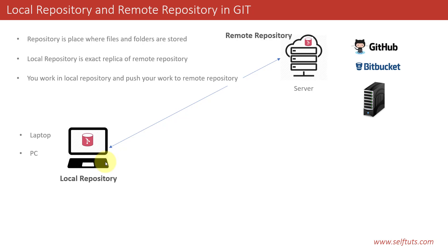Now you work in your local repository and push your work to the remote repository. You work on your local repository, make changes to files, create new features, write new code, and solve bugs. Then you save those changes to the local repository and push or send those changes to the remote repository. So why is it important that local and remote repositories are connected? Because you need to make changes, save them, and then push to the remote repository.